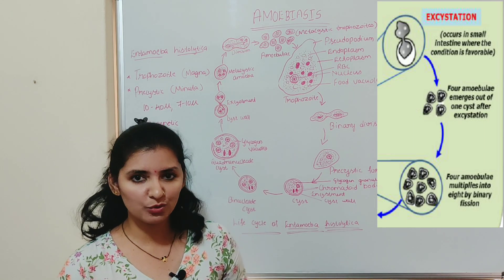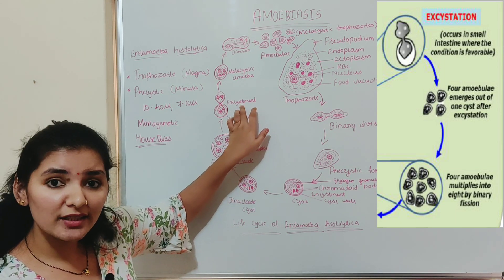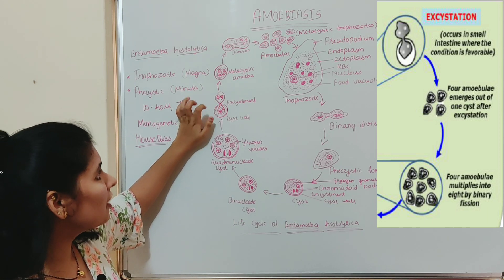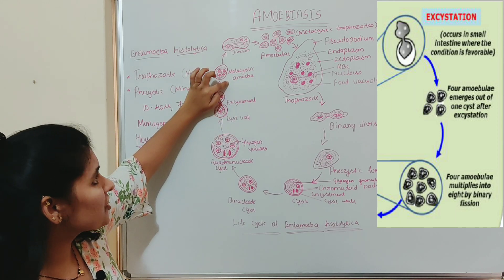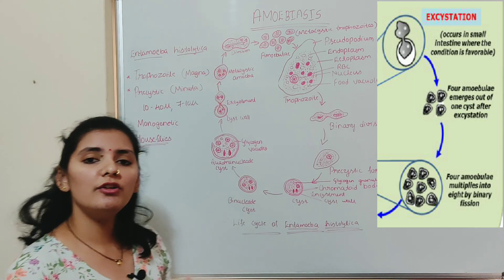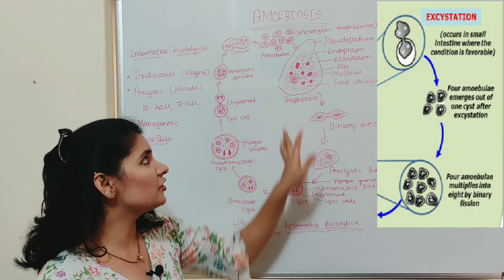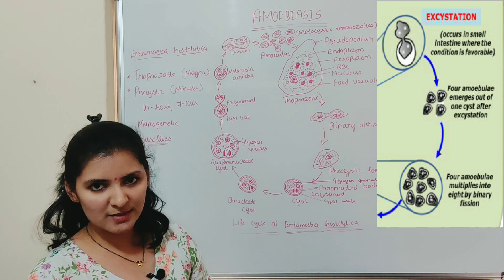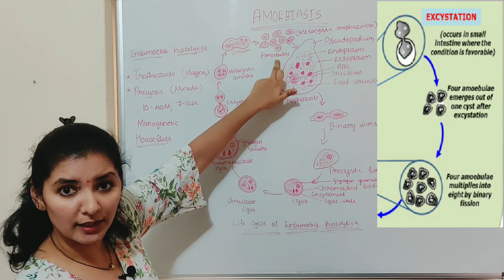Once the infective cyst enters the large intestine of the new host, a process called excystation begins. During excystation, the tetranucleate amoeba emerges from the cyst through a small pore in the cyst wall. At this stage it is called a metacystic amoeba. This metacystic amoeba then undergoes a series of nuclear and cytoplasmic divisions to form the next generation of trophozoites.